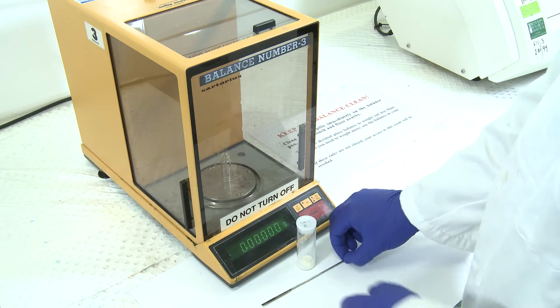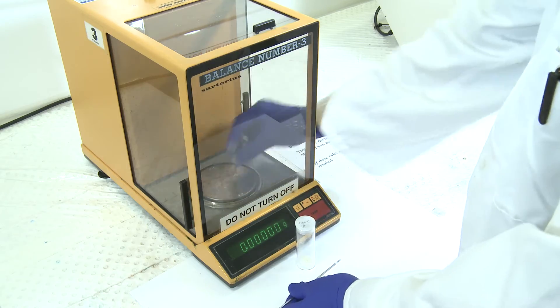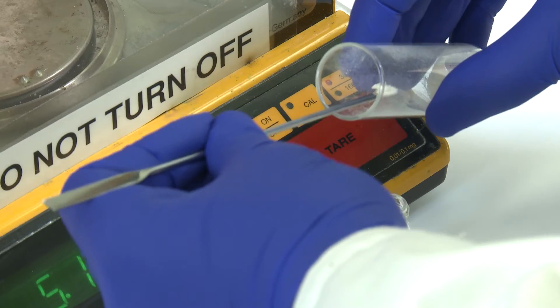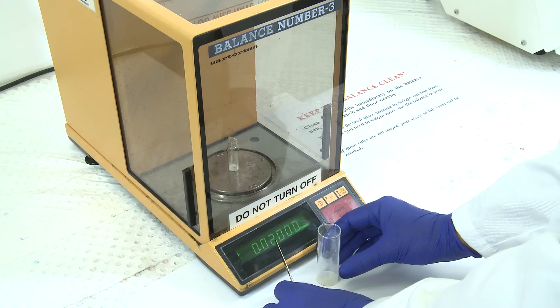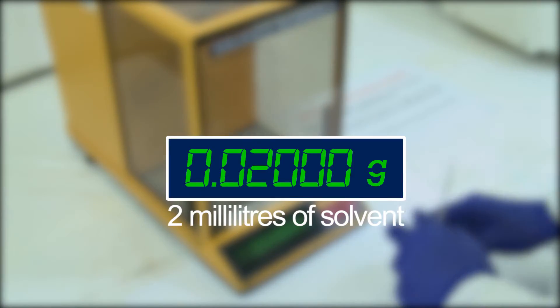Firstly, we need to accurately weigh out our gelator. Today I'll be making gels at a concentration of one weight percent, so we'll be using 20 milligrams of gelator in two milliliters of solvent.